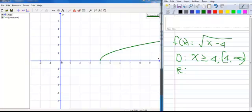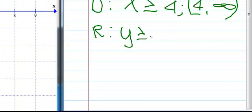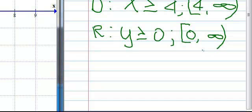So the range is never a negative number. The range starts at 0 and goes on up to infinity. So the way I can write that for range is Y is greater than or equal to 0. If I want to write it with interval notation, I can write it saying the range starts at 0 and goes up to infinity.